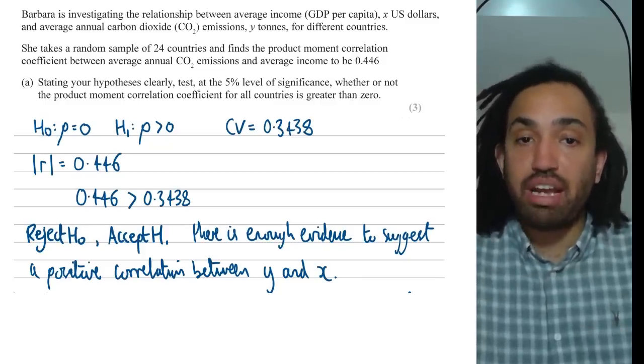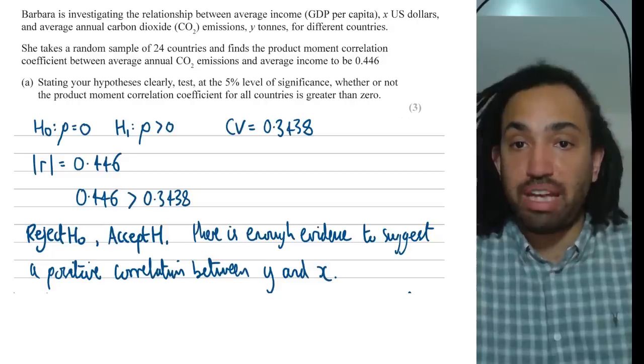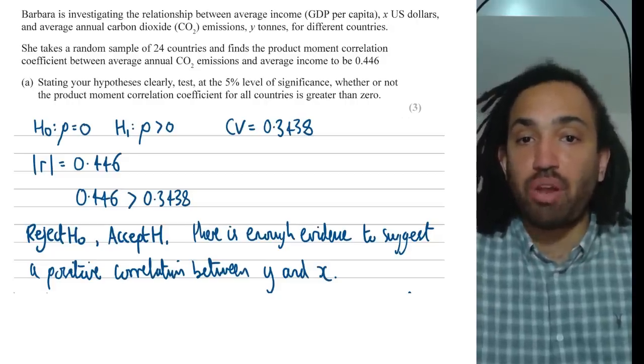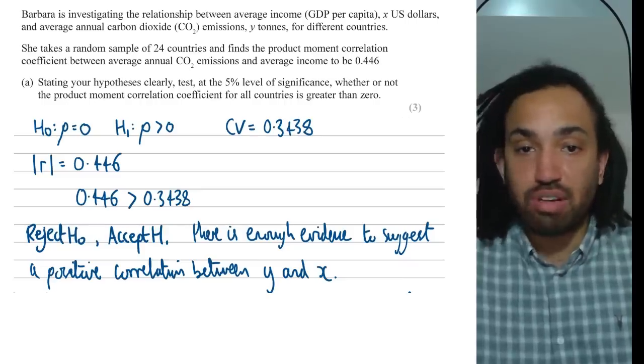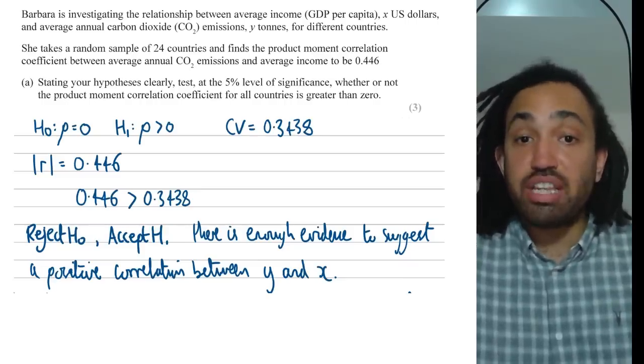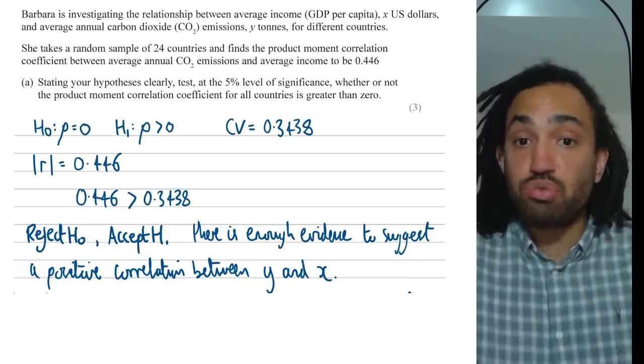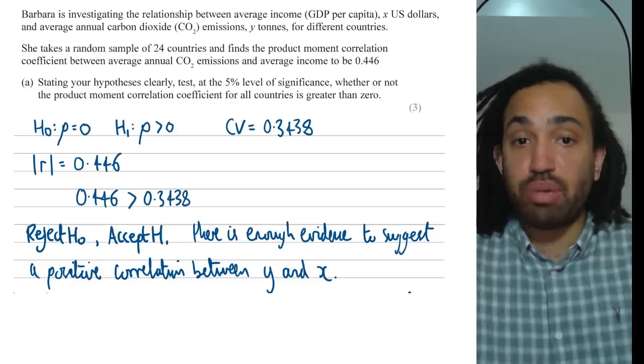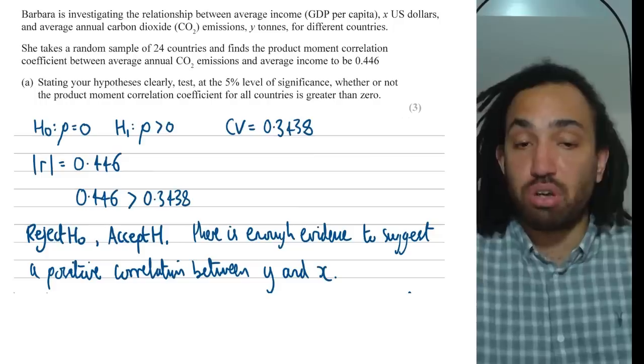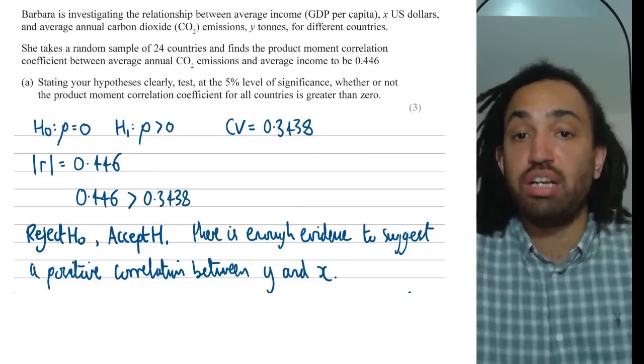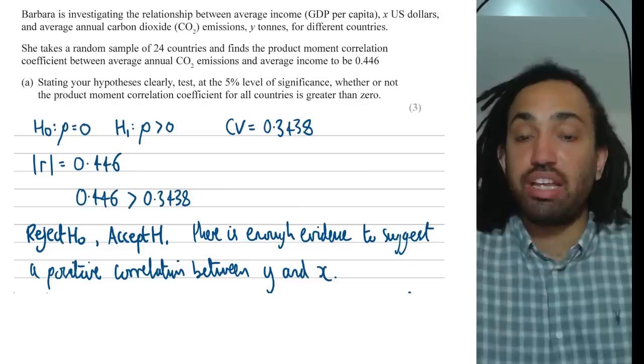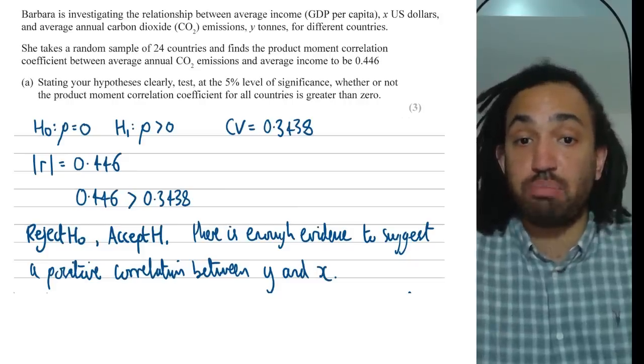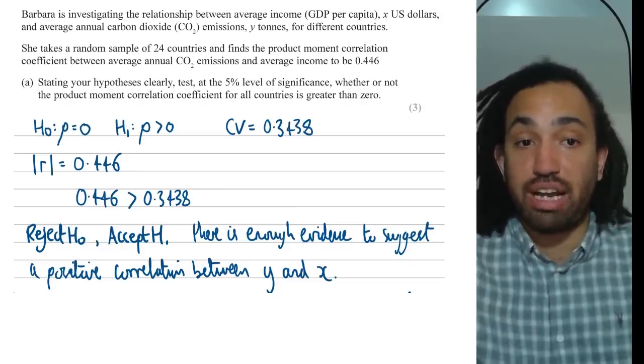I compare it against the modulus of the PMCC and that way we don't get confused if we're looking for negative correlation and we can see that the correlation that we've observed is greater than the critical value and that means when we reject H0 and we accept H1 there is correlation because the correlation we observed is greater than that critical value and then we say there is enough evidence to suggest a positive correlation between Y and X.